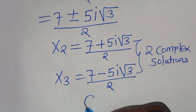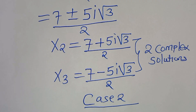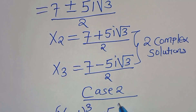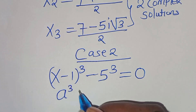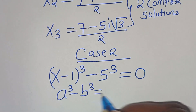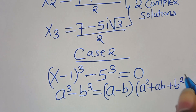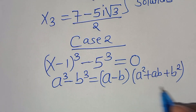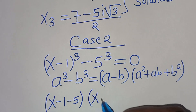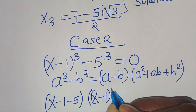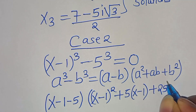In case 2 we have (x minus 1)^3 minus 5^3 equals 0. This is the difference of two cubes, a³ minus b³, which factors as (a minus b)(a² plus ab plus b²). Applying this identity gives (x minus 1 minus 5) times [(x minus 1)² plus 5(x minus 1) plus 25] equals 0.